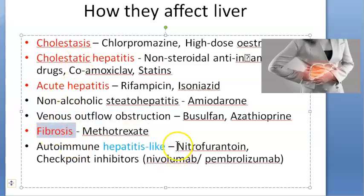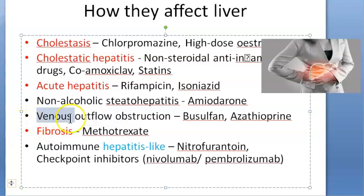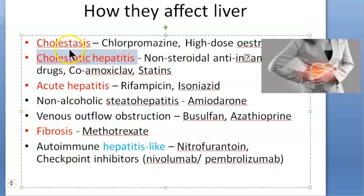The one mechanism I almost forgot — fibrosis. So to complete the list: fibrosis, venous outflow obstruction, autoimmune hepatitis-like situation, hepatitis itself, and cholestatic hepatitis. Now we have covered everything.